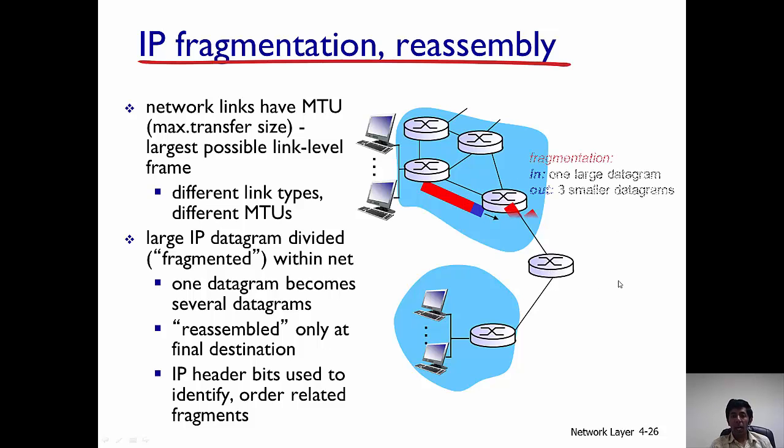What happens is that it gets fragmented. So this router could send the entire IP datagram to this router. Now it's crossing over to another network. It's just too large, larger than the MTU that is used for this link layer protocol, so it is just divided into three smaller datagrams.